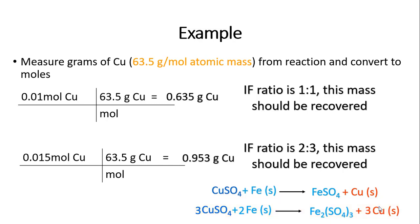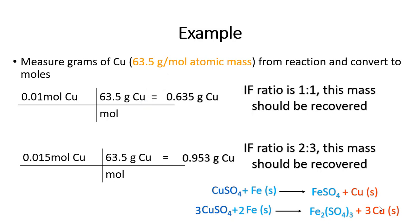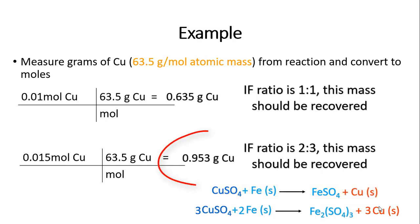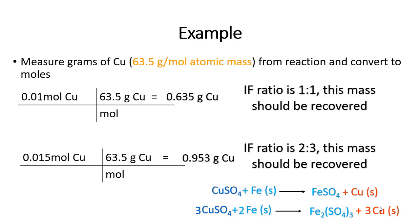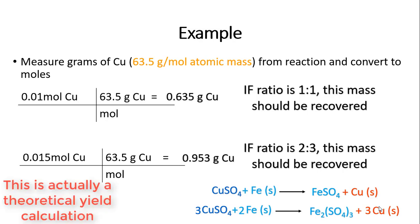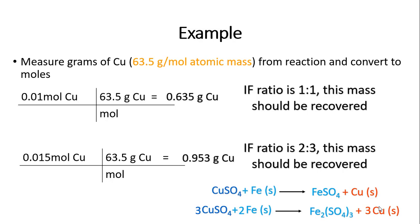Knowing those two numbers, when I do the experiment and recover the copper: if the mass I recover is 0.635 grams or less, I know I'm dealing with the top reaction where the ratio is one to one. If I recover a mass up to 0.953 grams, I know the ratio is two to three and I'm dealing with the bottom reaction. I can then also figure out the percent yield.